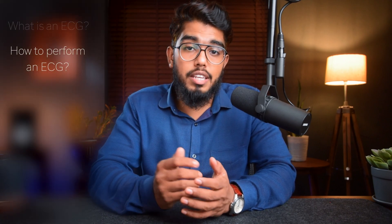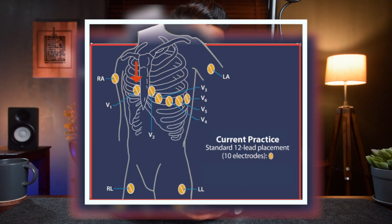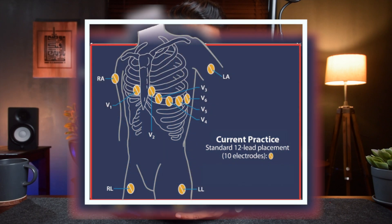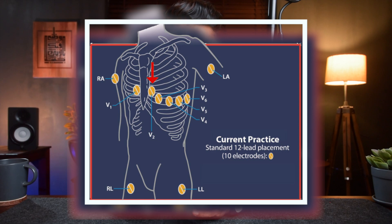To perform an ECG, electrodes are placed on the skin of the chest, arms, and legs, and we have to make sure they're placed at the correct positions. V1 is placed at the 4th intercostal space at the right sternal border. V2 is placed at the 4th intercostal space at the left sternal border.